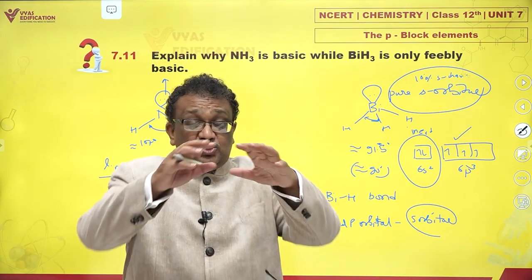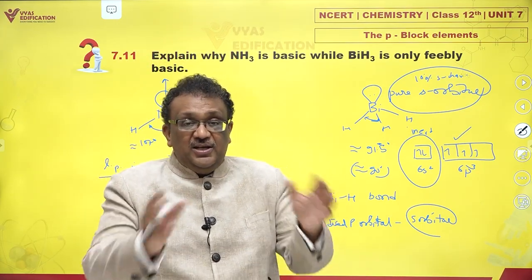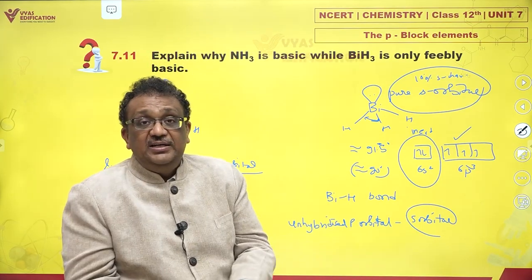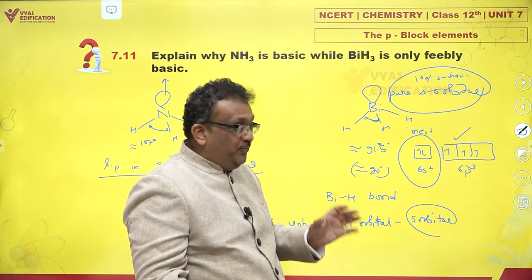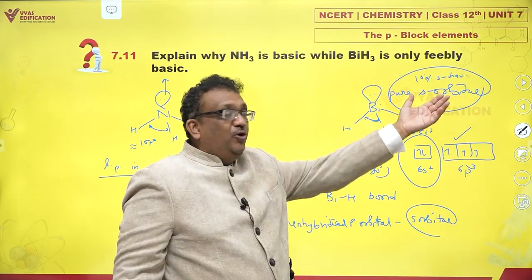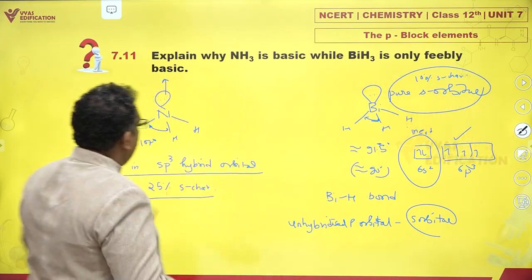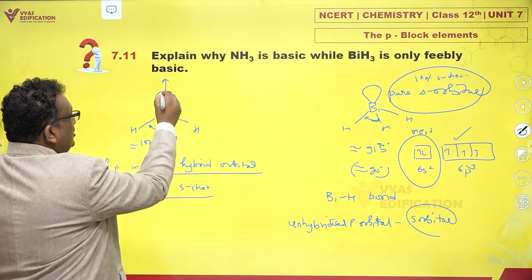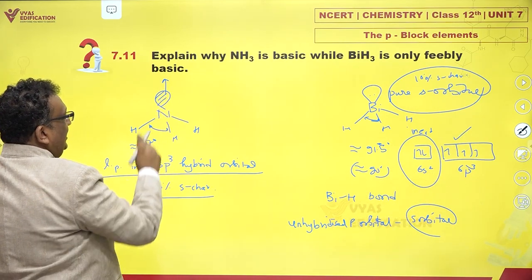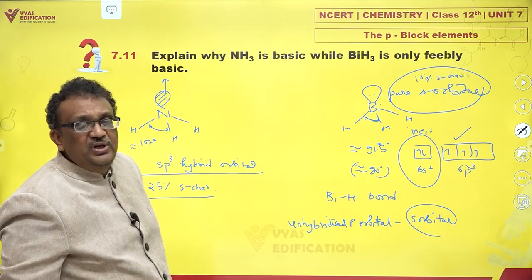Also, the s orbital is spherical — it extends on all sides. A spherical electron pair is more difficult to donate in one specific direction. In sp3 hybridization, the lone pair is already directed to one side, so it gets donated much more easily.